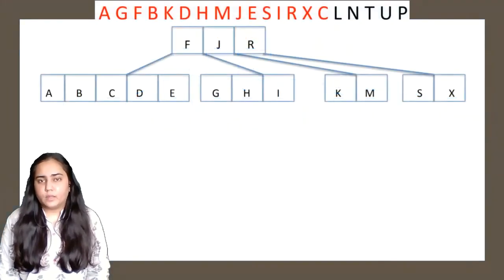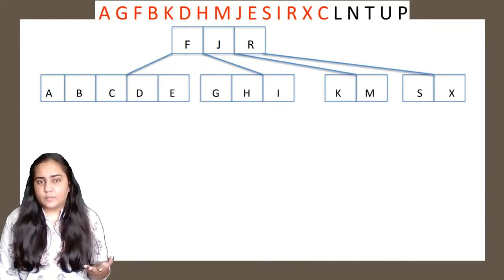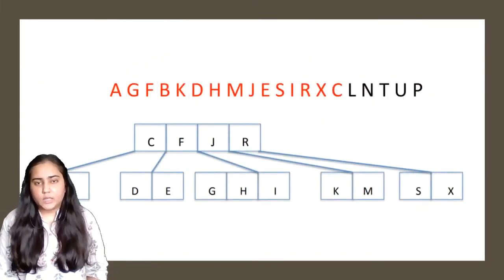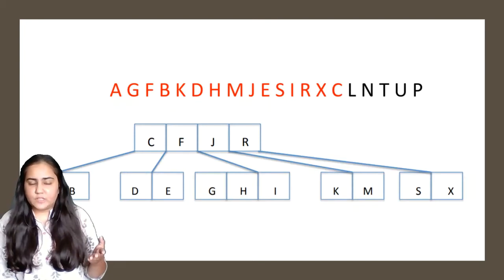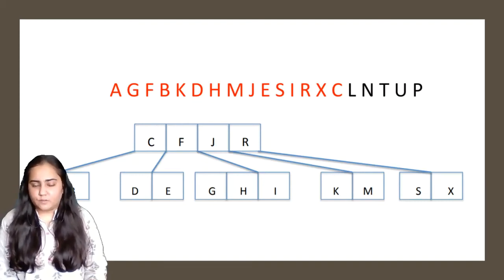Next we insert C. To insert C, go to the left of F, but again there's no space. If inserted, C would come between B and D, and C is the key in the middle. So C is taken up to the parent. On the left of C there are A and B; on the right of C there are D and E. The rest of the tree takes care of itself.